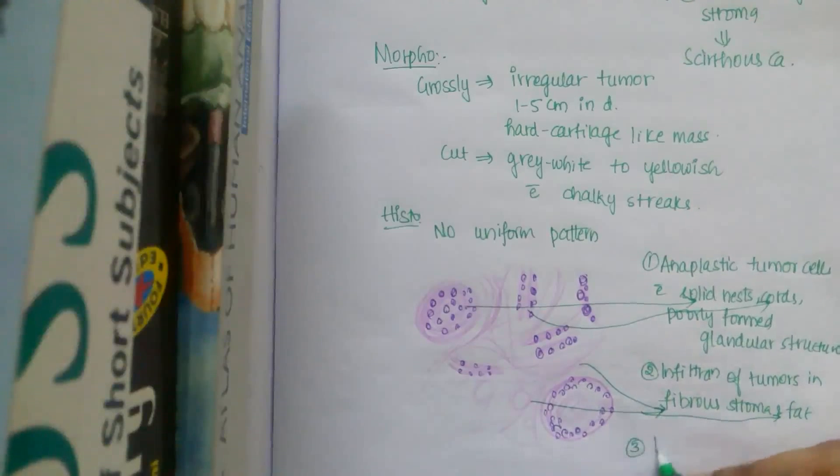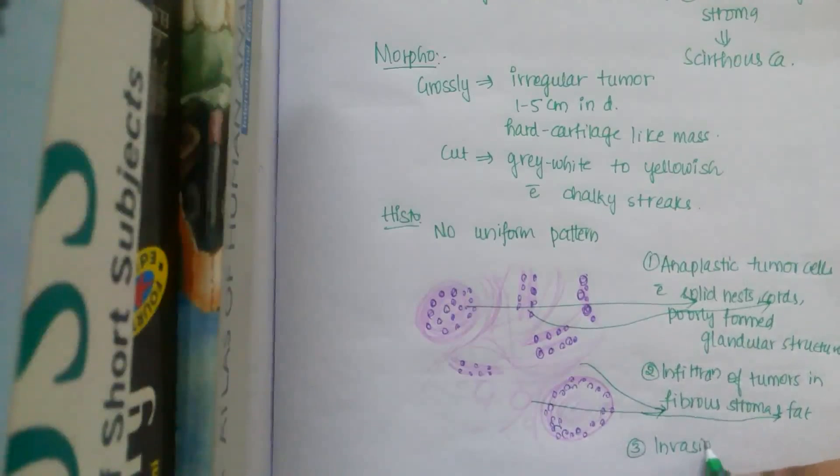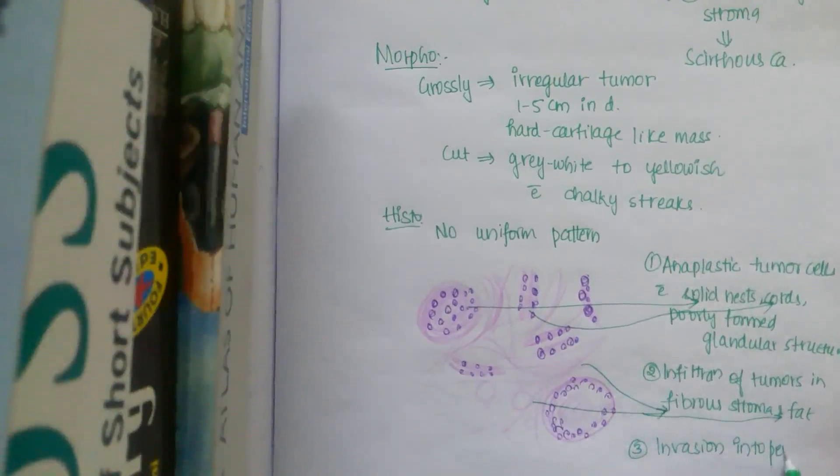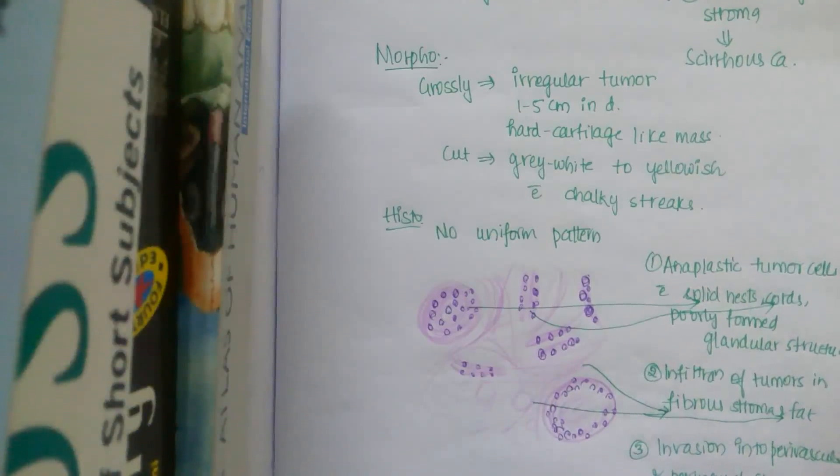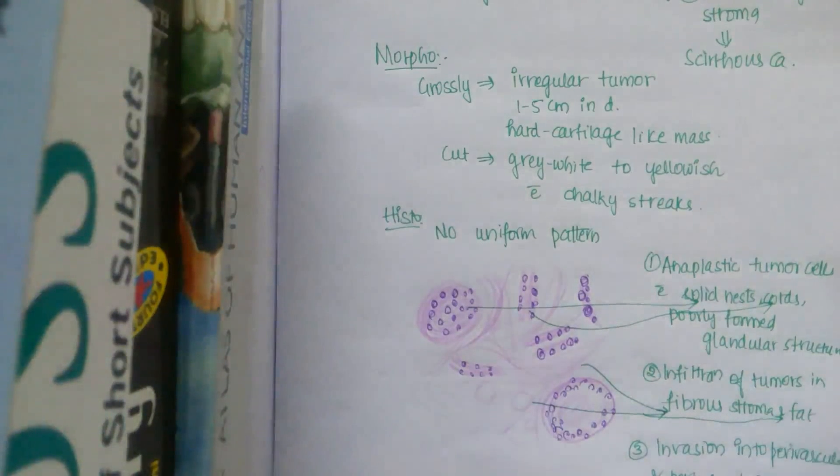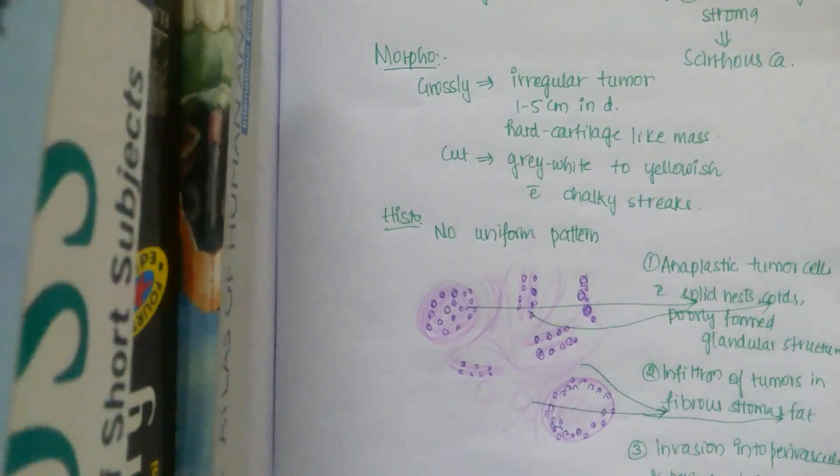And third one is invasion into perivascular and perineural spaces is seen. So these are the features of infiltrating ductal carcinoma.